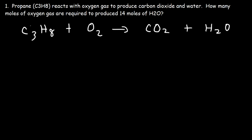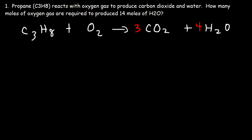We have 3 carbon atoms on the left side, so we need to put a 3 in front of CO₂. We have 8 hydrogen atoms on the left; to balance, we need an equal number on the right — 2 times 4 is 8 — so we put a 4 in front of H₂O. On the right side we have 4 oxygen atoms in the 4 water molecules and 6 in the 3 CO₂ molecules, totaling 10 oxygen atoms. So 10 divided by 2 is 5 — we need a 5 in front of O₂ to balance the reaction.